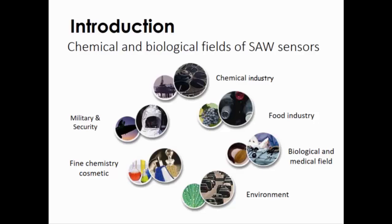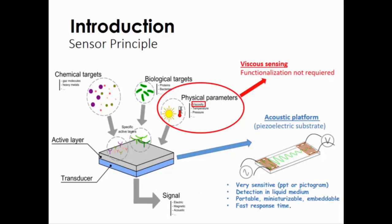The sensor principle is shown here. Everybody knows how it works. First, we have chemical or biological targets. We can functionalize this active layer. In our case, we can avoid functionalization in the case of physical parameter estimations. The transducer we use is an acoustic transducer here. The principle is simple. You have two IDTs here and here. In the first one, we can call it the emitting IDT.